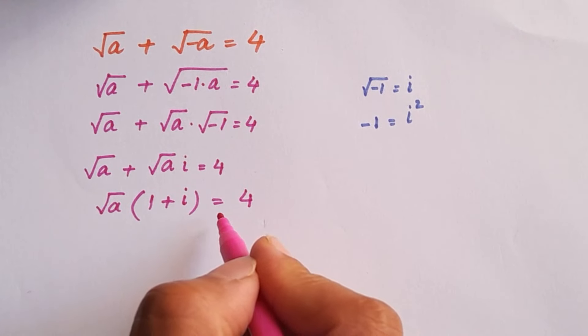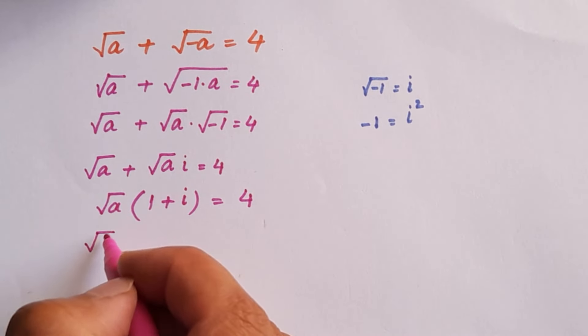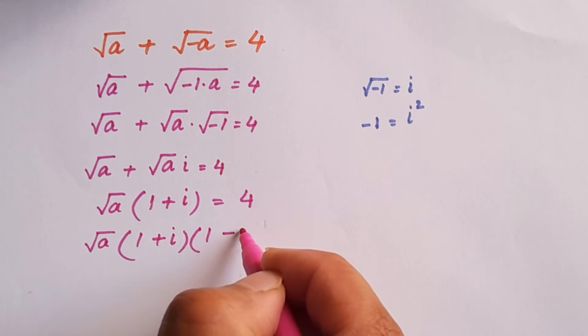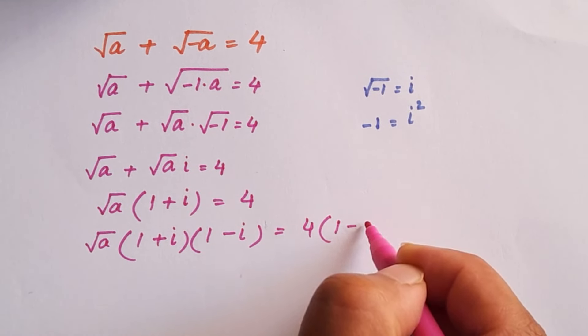Here we are going to multiply both sides by 1 minus iota. So root a times 1 plus iota times 1 minus iota and right hand side 4 times 1 minus iota.